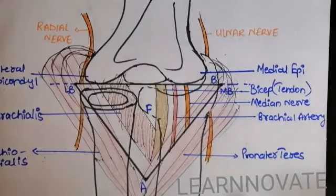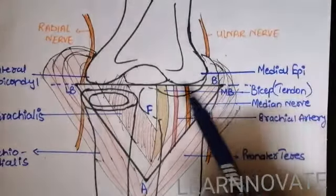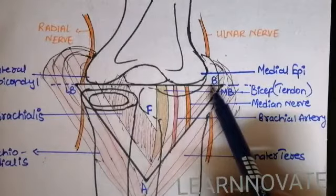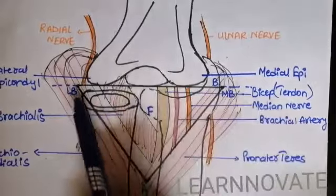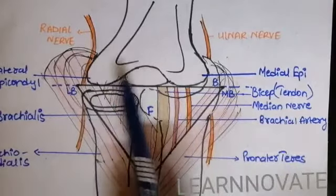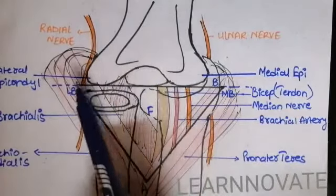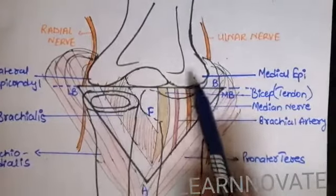Now we are going to discuss its boundaries, its content, and the base of the cubital fossa. Here you can see this line is called as the base of cubital fossa, that is formed from the imaginary line joining the two condyles of the humerus — that is the lateral epicondyle and the medial epicondyle.